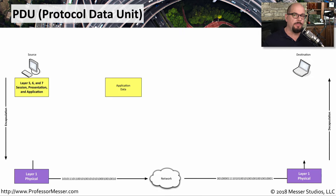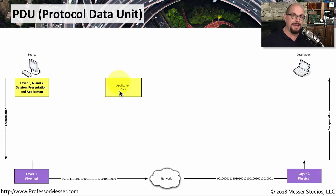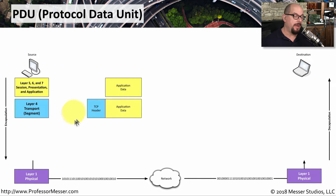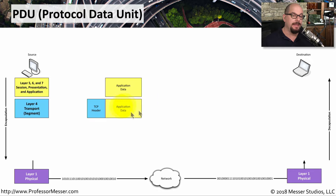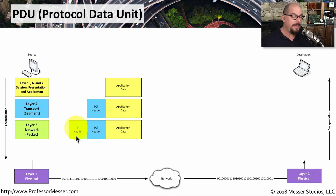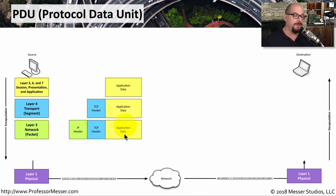Let's see how these different PDUs operate at these different OSI layers. The source device would like to send application information to the destination, so we start with the data associated with that app. To be able to send that application information, we're going to add on a TCP header. So there's a protocol data unit inside of that TCP packet that contains the application information. Then we need to add on an IP header, which is going to have a PDU inside of that containing the TCP header and everything else.